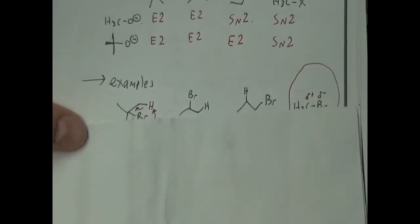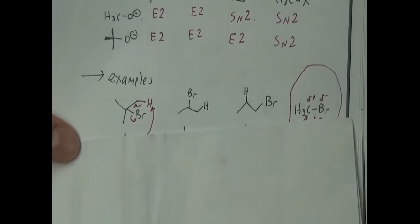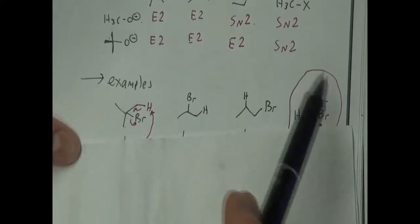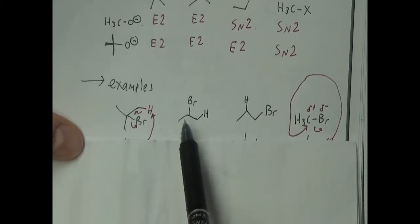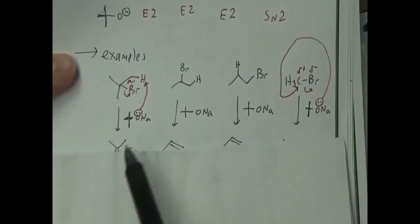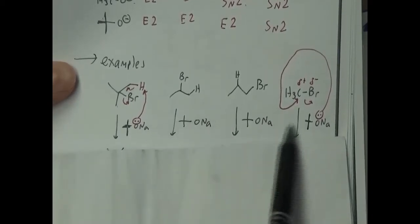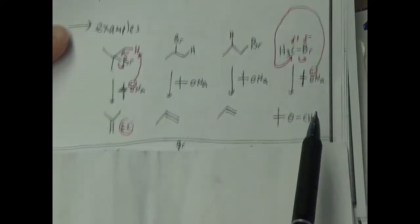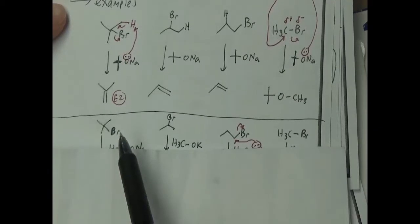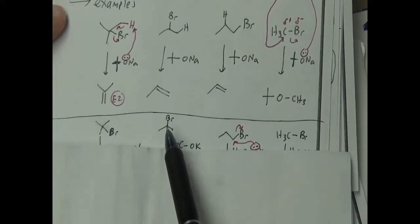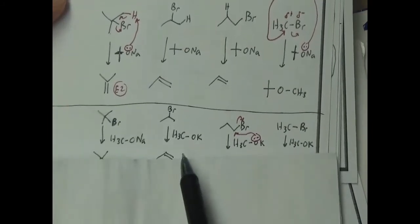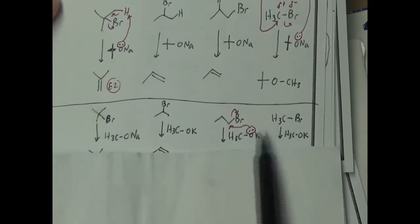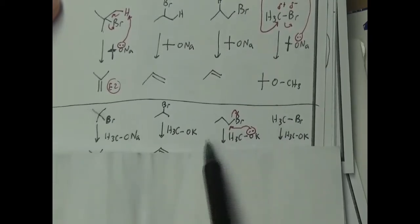Last time I showed some examples emphasizing these substrate effects — tertiary, secondary, primary, and methyl. With the large branched alkoxide, the only one that does SN2 is the methyl case; for primary, secondary, and tertiary it's E2, E2, E2. For small alkoxides with the same substrates, it goes E2, E2, SN2, SN2 — really a good summary.